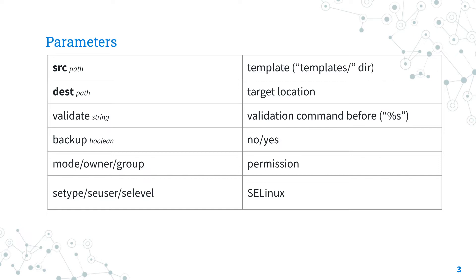If the backup parameter is enabled, Ansible creates a backup file including the timestamp before copying to the destination. We can also specify the permissions and SELinux properties.